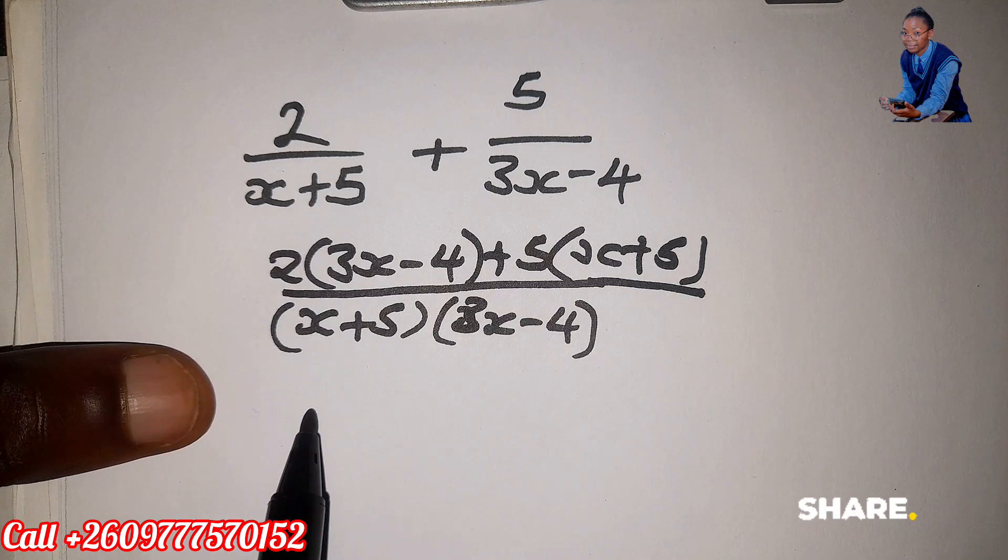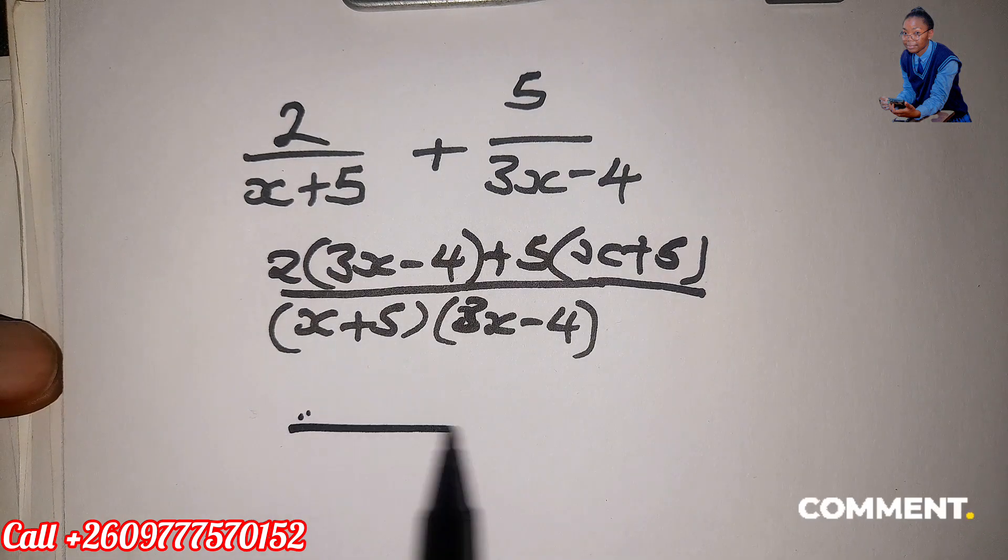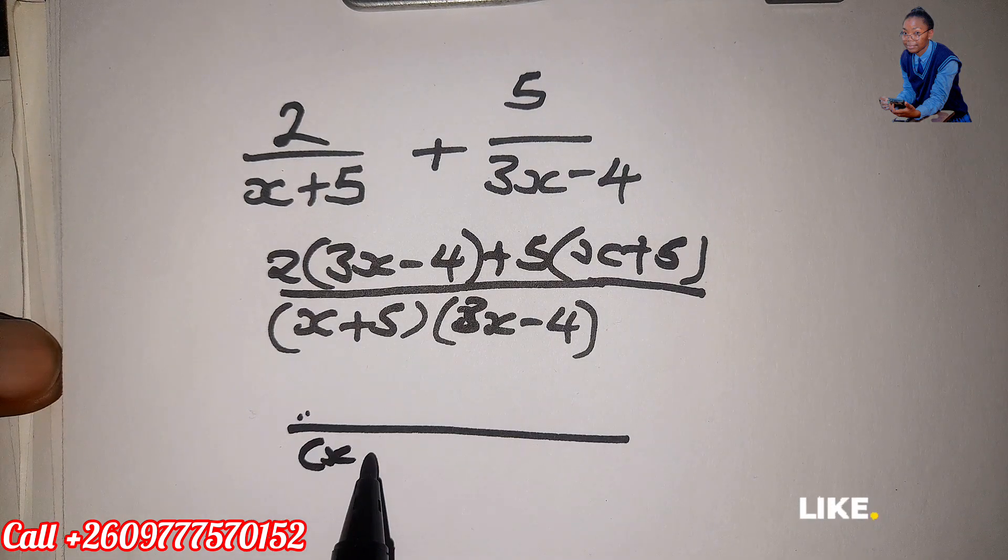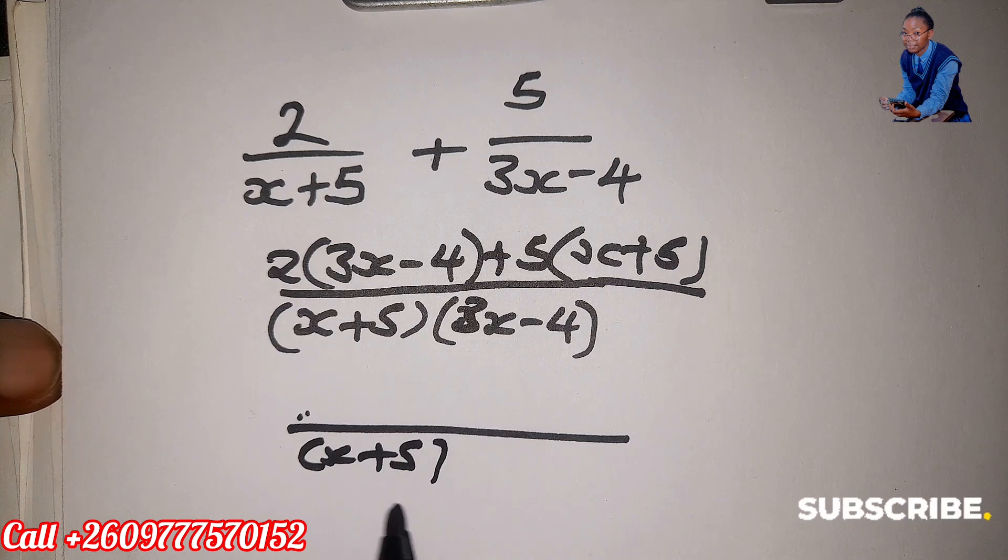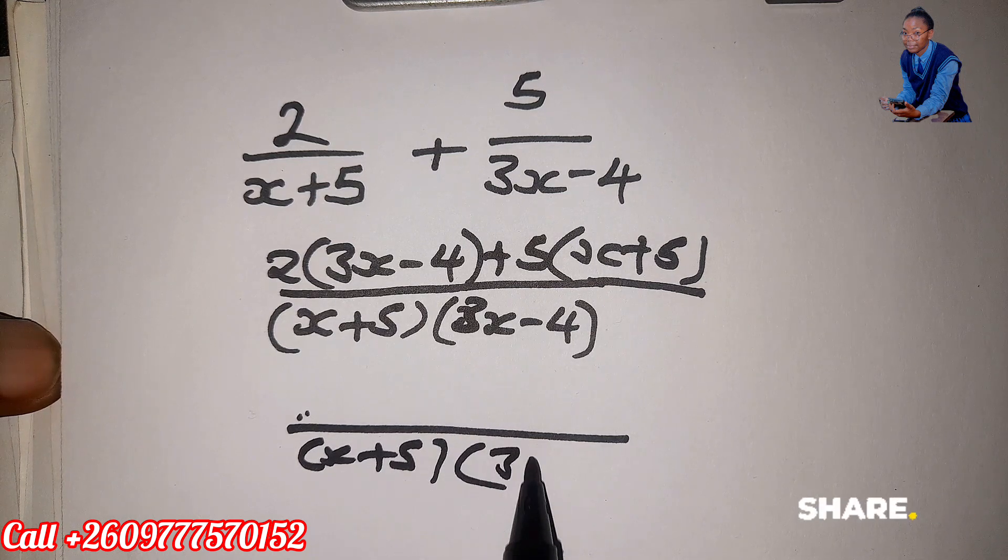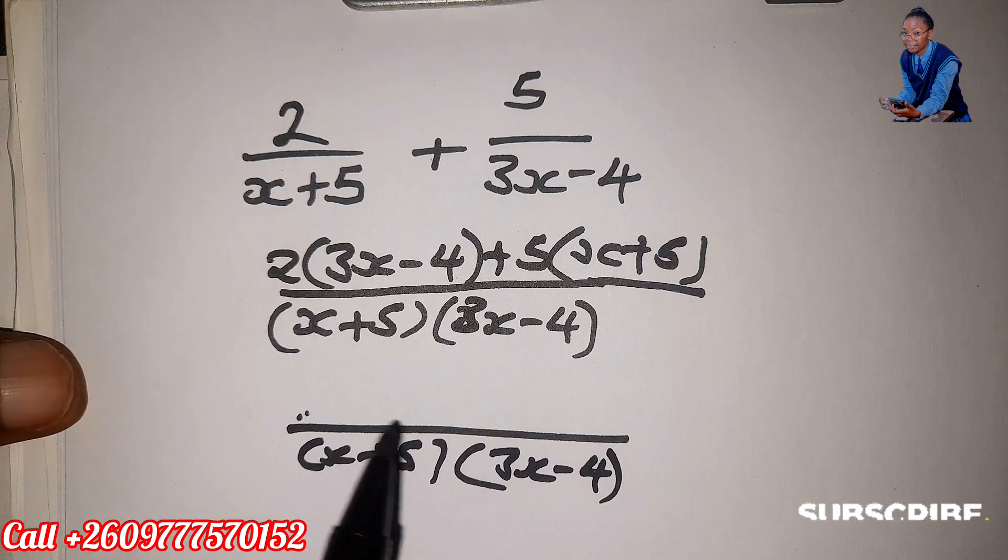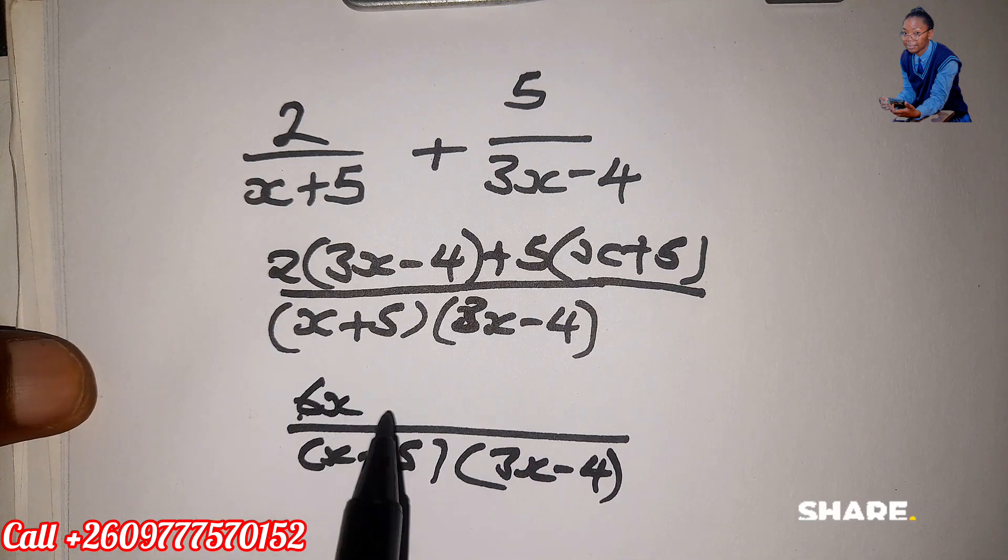Then we just need to expand. Okay, write the denominators, which are x plus 5 and 3x minus 4. So 2 times 3 is 6x,